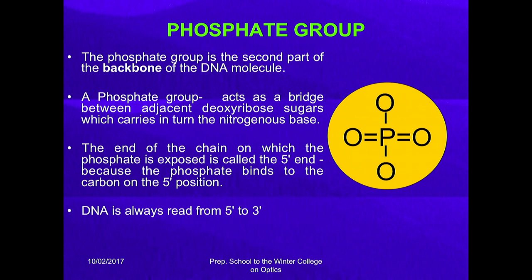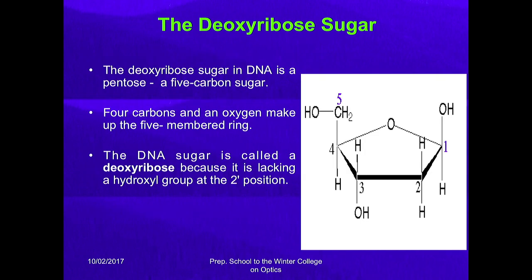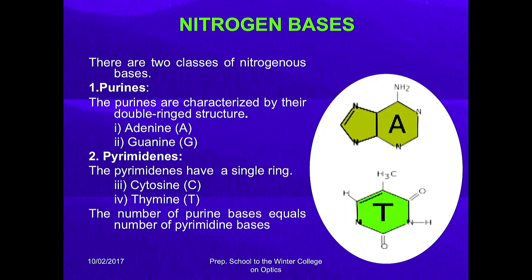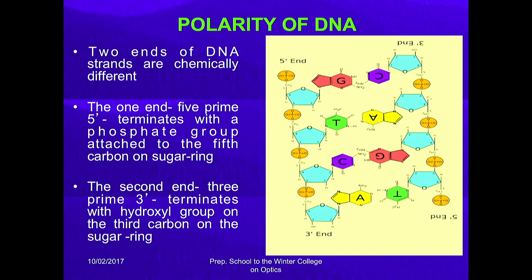The phosphate group is the second part of the backbone of the DNA molecule. A phosphate group acts as a bridge between adjacent deoxyribose sugars, which carry in turn the nitrogen bases. The end of the chain on which the phosphate is exposed is called the 5 prime end, because the phosphate binds to the carbon at the fifth position. The other end is the 3 prime end where there is no phosphate group. DNA is always read from 5 prime to 3 prime.